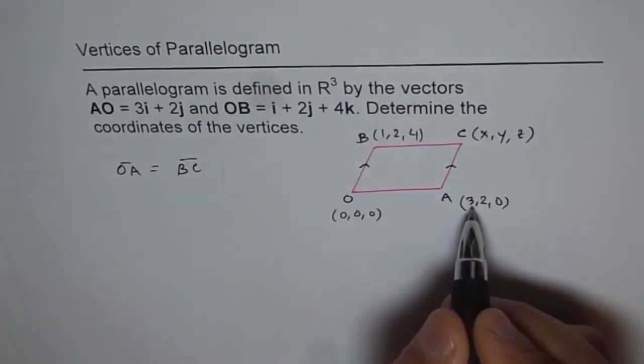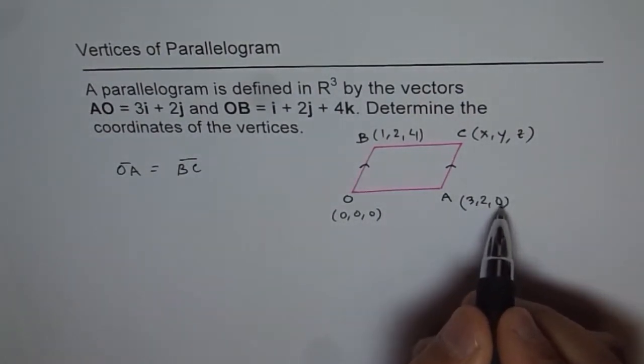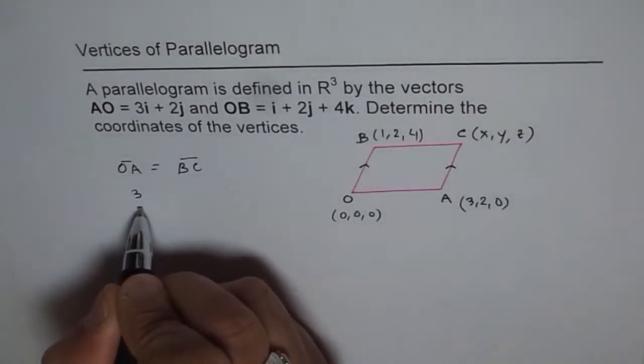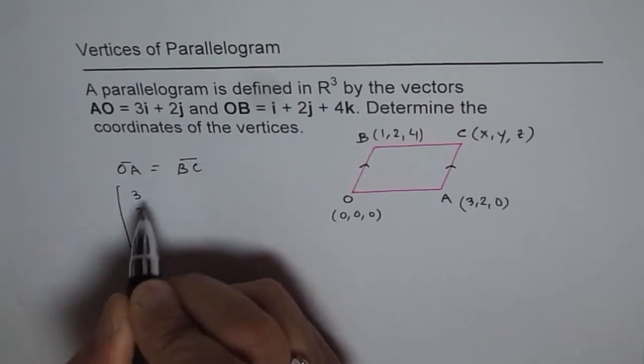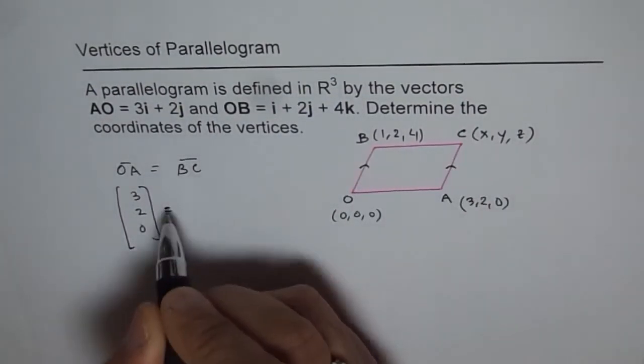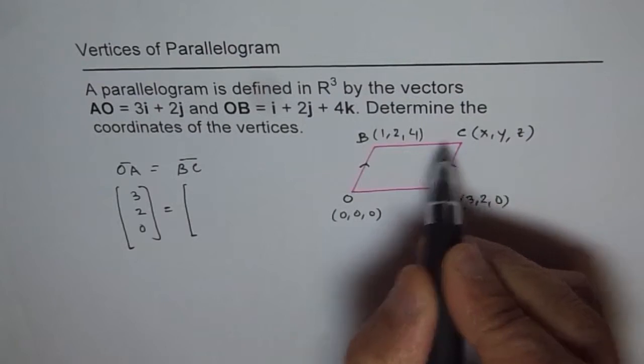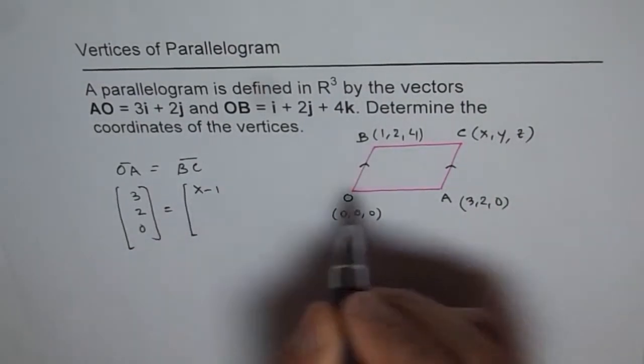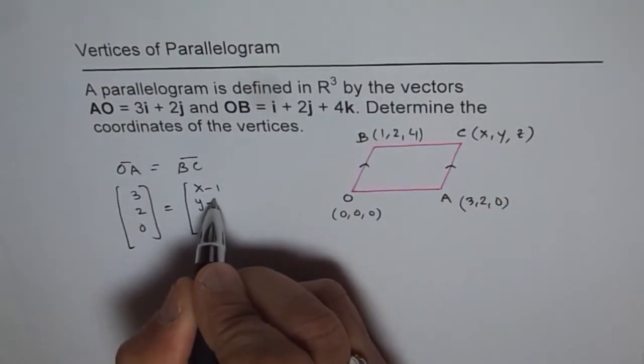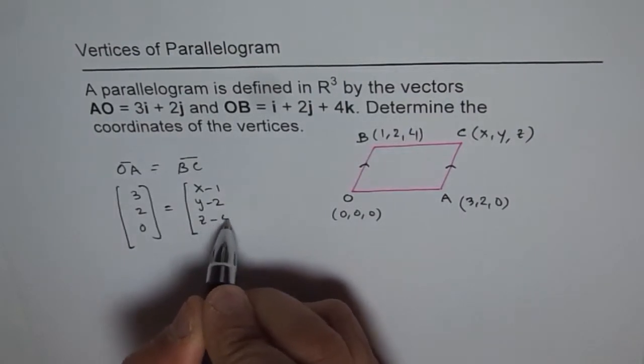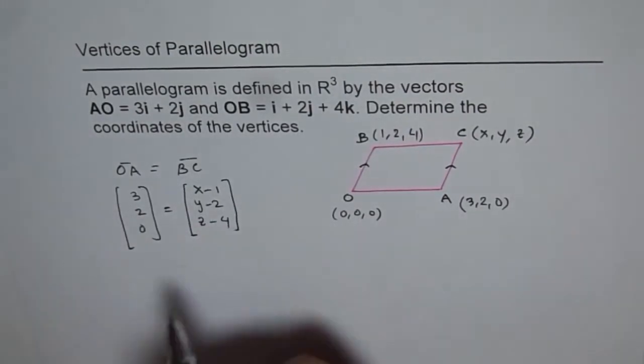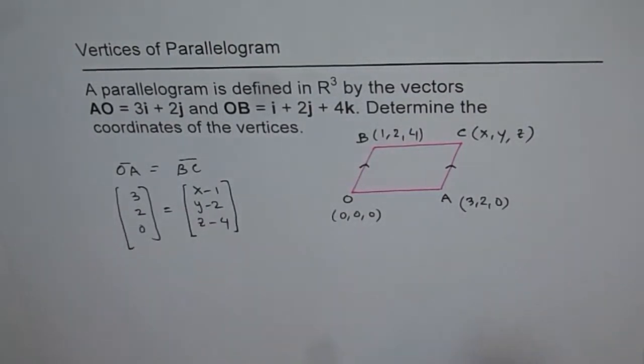What is OA equals to? OA is (3, 2, 0). That equals BC. And BC is (X - 1, Y - 2, Z - 4). Now we can equate this and find XYZ.